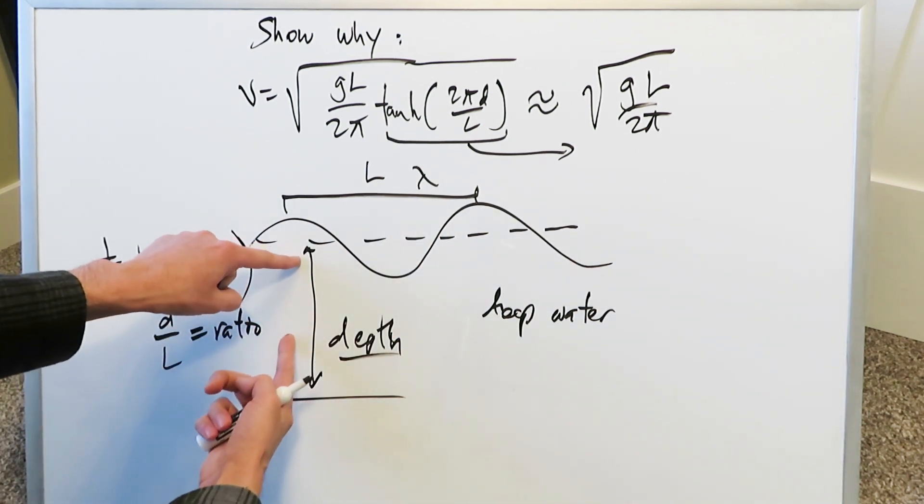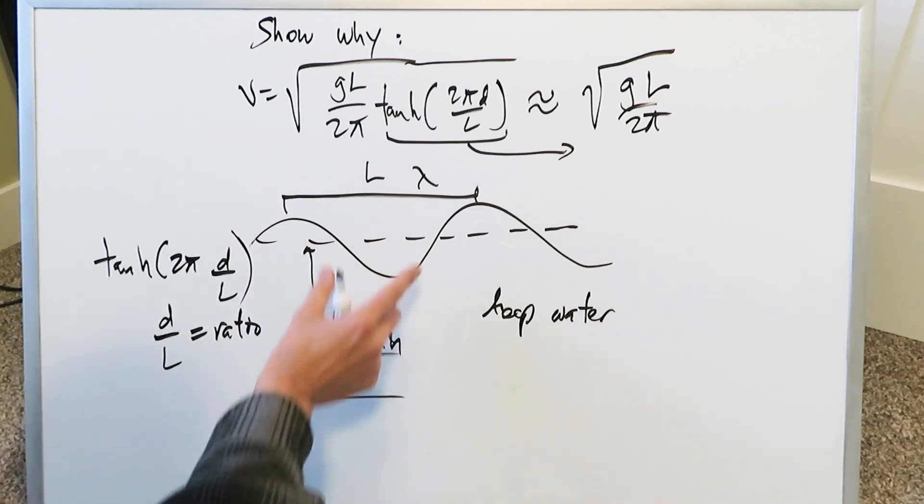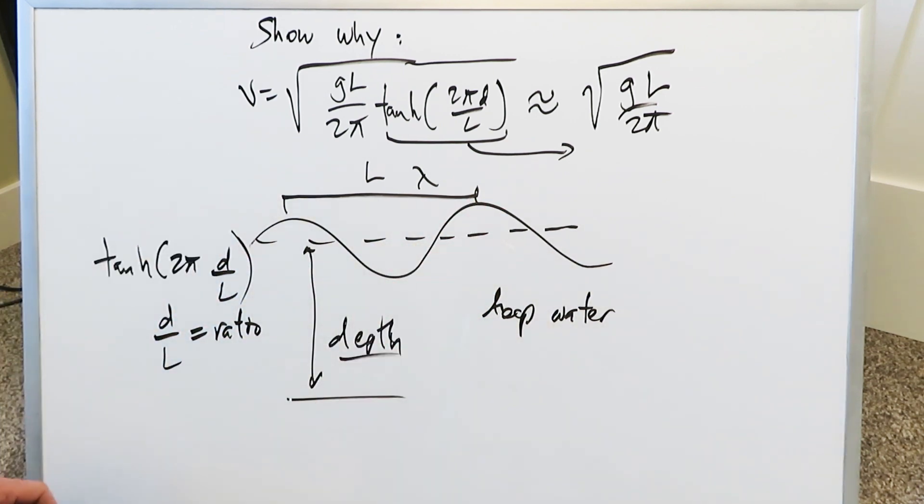You know, in deep water, you could have a depth which is hundreds to thousands of feet, whereas the wavelength may be just several meters, or it could be larger than that. But either way, the ratio is such that you have a very large number in terms of the depth divided by a relatively smaller number. And when you look at this ratio, this d over L ends up becoming, in terms of a ratio, a large number.